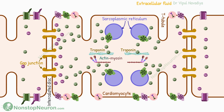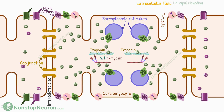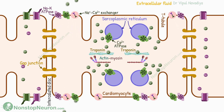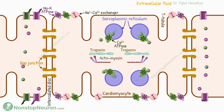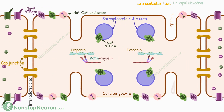Now, to initiate relaxation, we have a different set of transport proteins on the membranes. The sodium-potassium ATPase pump removes sodium from the cell. And the sodium-calcium exchanger and calcium ATPase pump move calcium out of the cell and back into the sarcoplasmic reticulum. Without calcium, the cross-bridge cycle stops and the muscle relaxes.